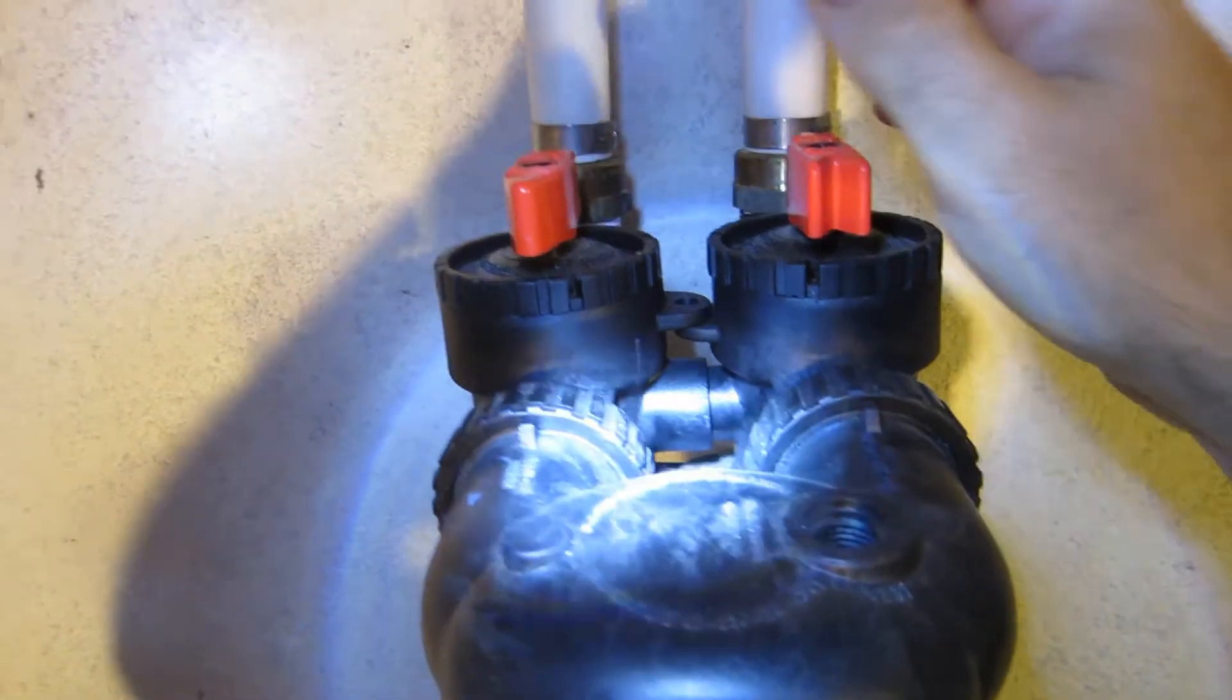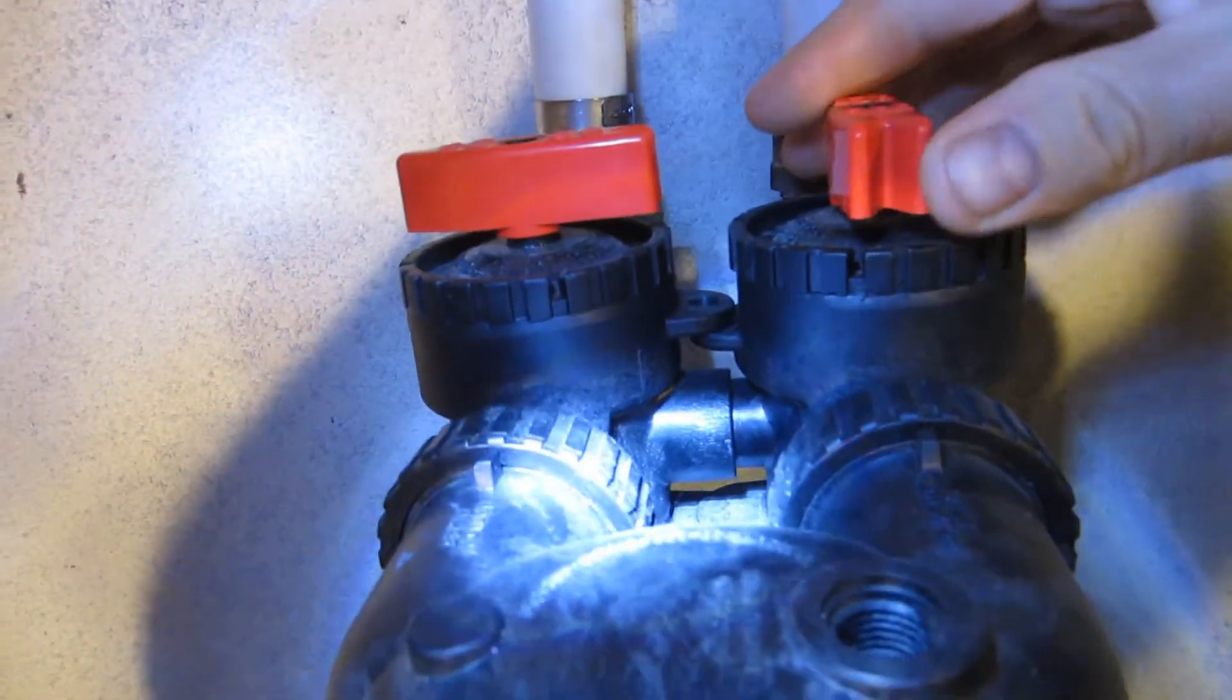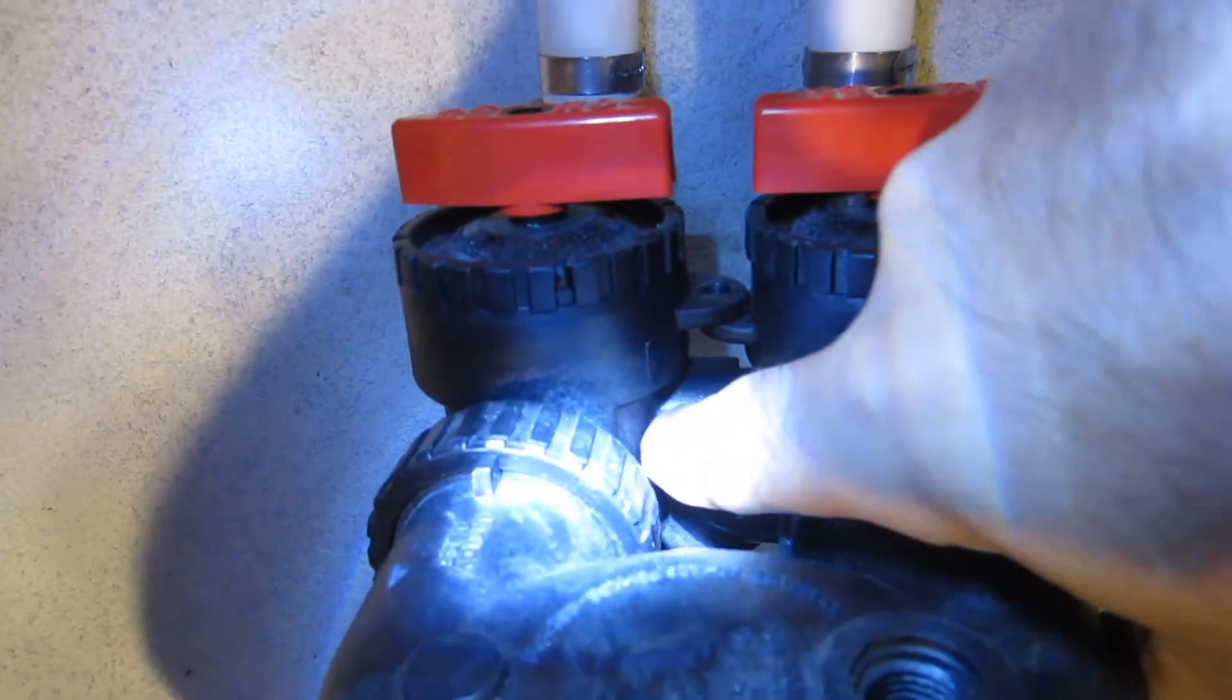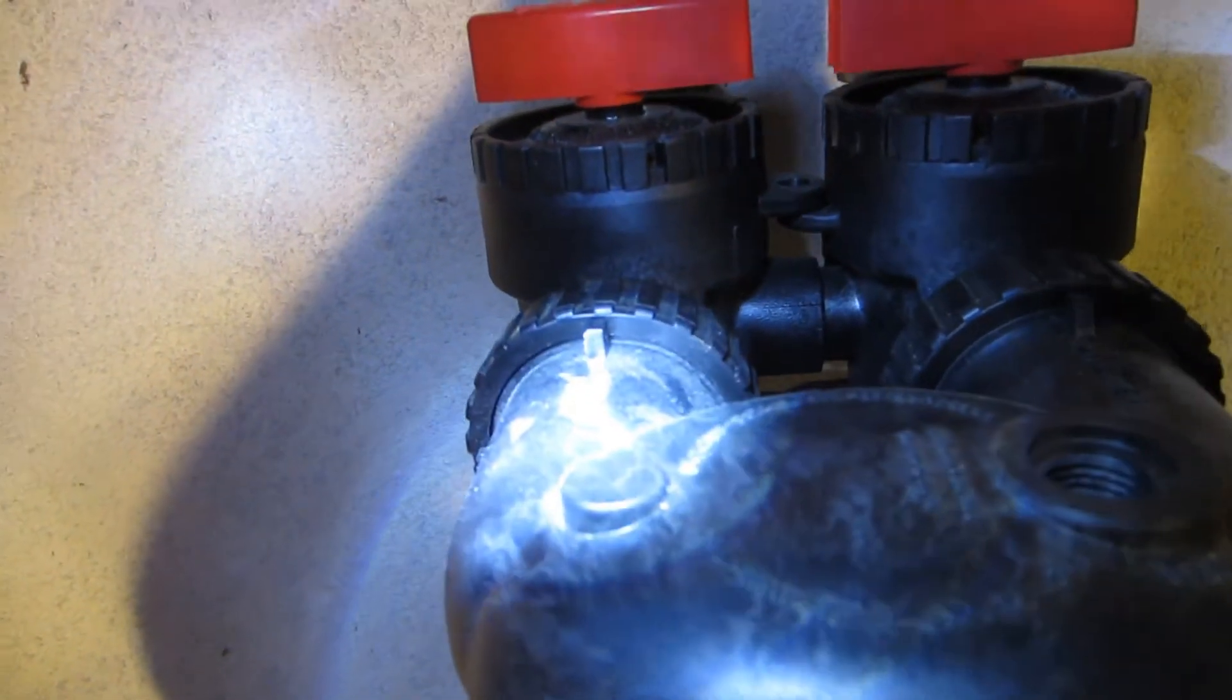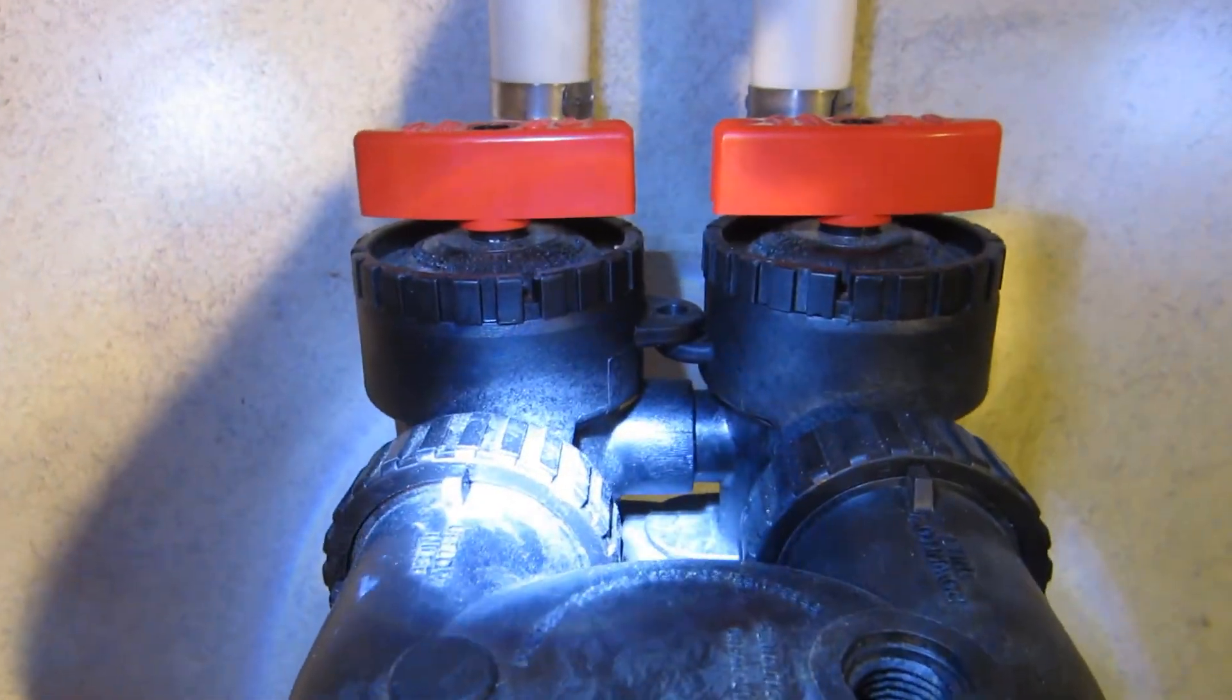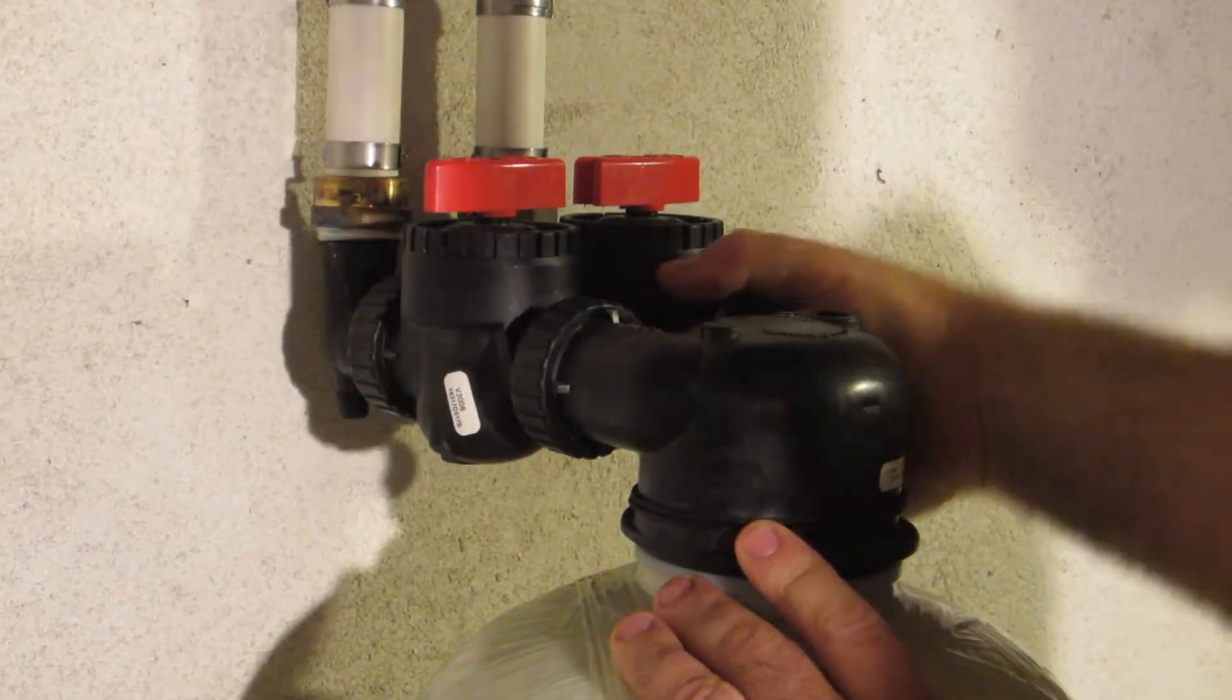The first thing that we're going to do is we're going to shut the valves off but we're turning them off to the tank but this crossover right here is going to allow the water to continue to flow through the house so I'm not really shutting off the water to the house at this point. There, let's loosen these.